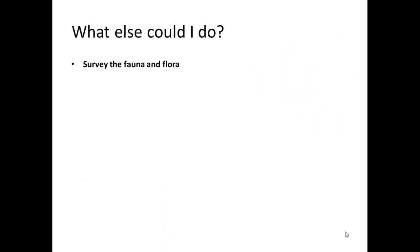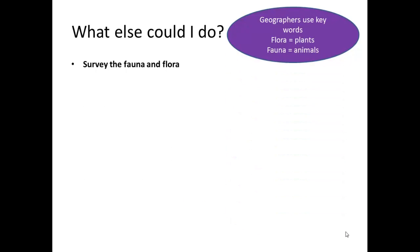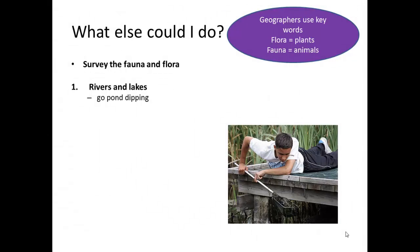There are some different, fun and exciting surveys that you could do of the flora and fauna. Flora and fauna are key geographical words that you can use. First thing you could do when you're looking at rivers and lakes is to go pond dipping. You must make sure you ask your parents before you do this and talk to them about where you're going. There are lots of online identification charts you can use to identify any animals or wildlife that you may find.